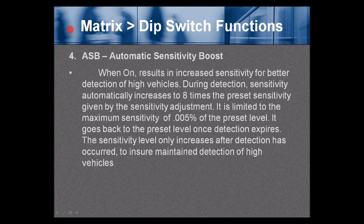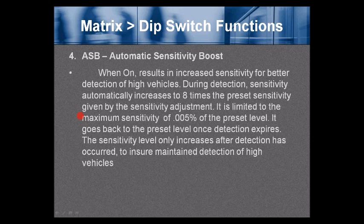DIP switch 4: ASB — automatic sensitivity boost. When on, results in increased sensitivity for better detection of high vehicles. During detection, sensitivity automatically increases to eight times the preset sensitivity. It is limited to a maximum sensitivity of 0.005% of the preset level, and returns to the preset level once detection expires. Sensitivity only increases after detection has occurred to ensure maintained detection of high vehicles.